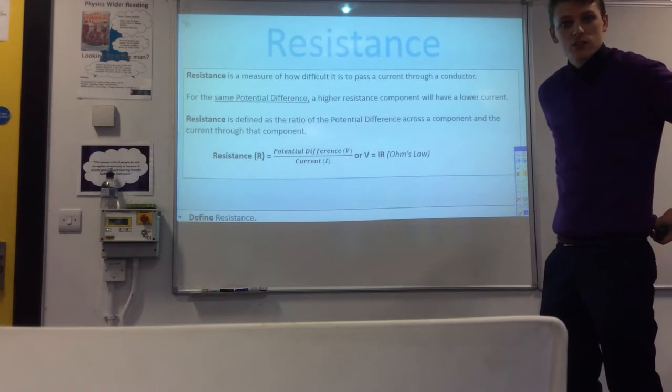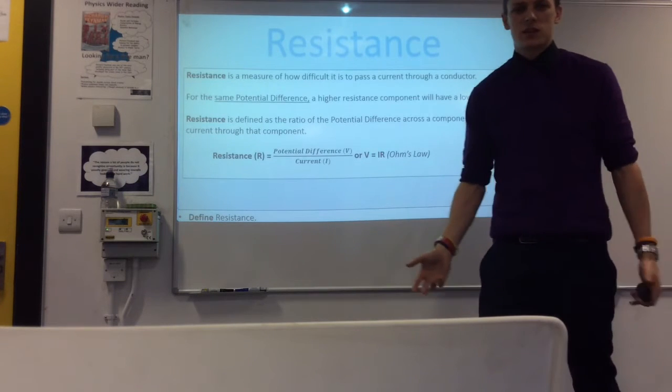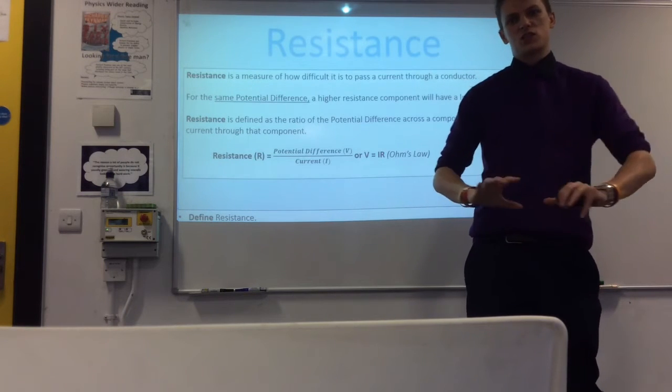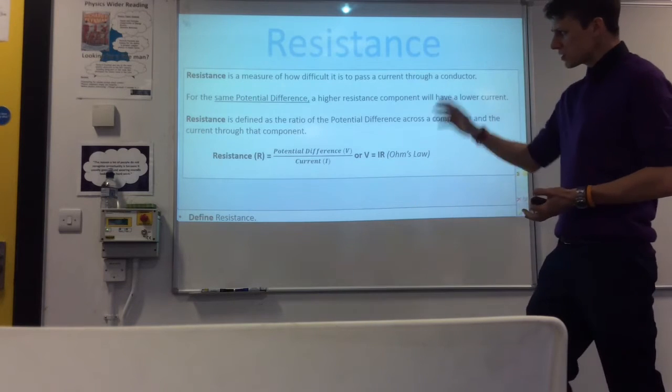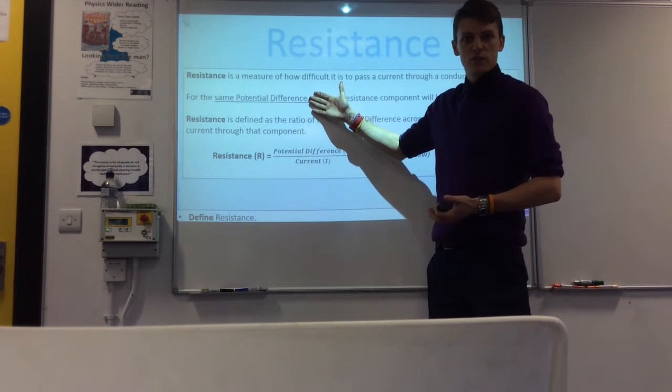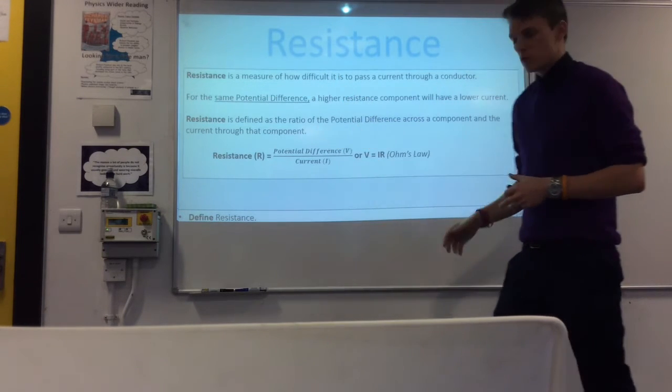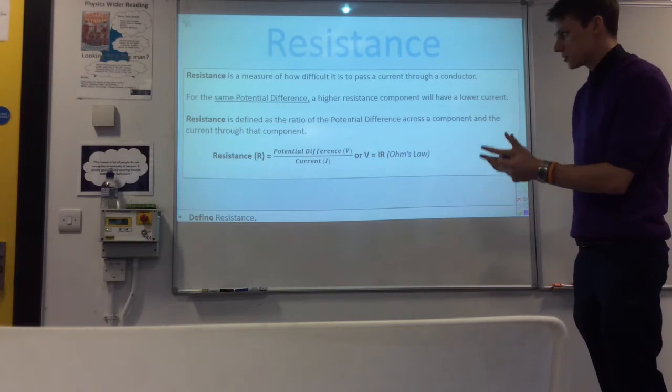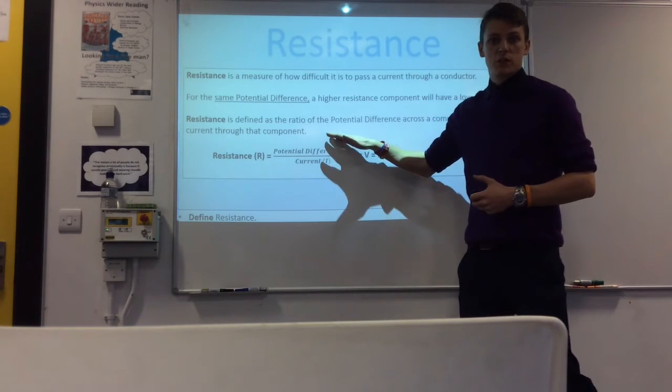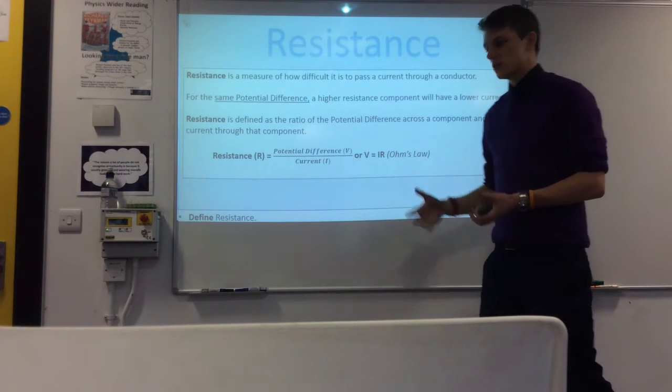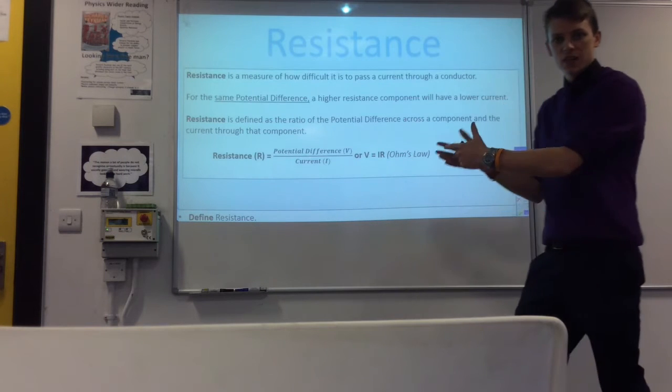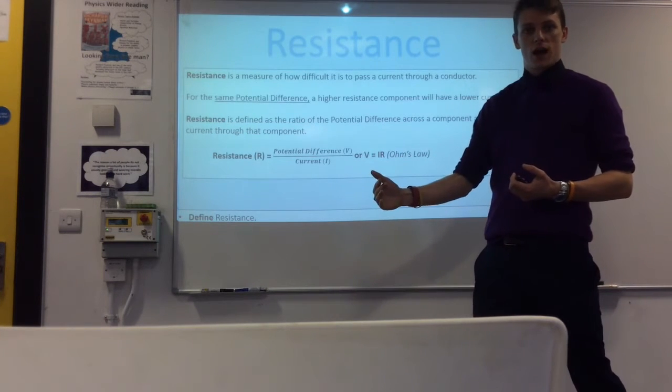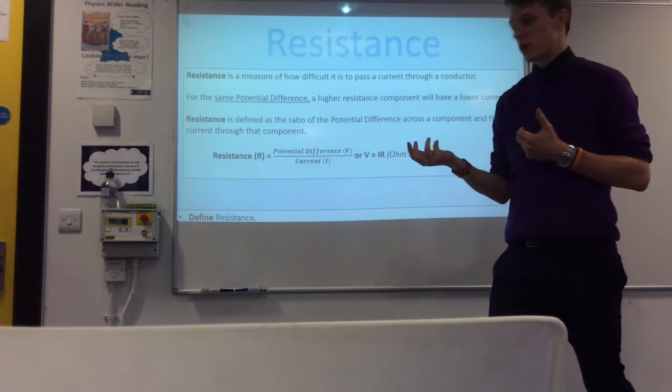Let's have a look at resistance. So resistance generally speaking is how hard it is for a current to pass through a component. That's generally the idea behind it. So if you apply the same potential difference across two components the one with a higher resistance would have a lower current. Essentially that's how it works. Now to be more specific about it which you need to be with your definitions, resistance is defined as the ratio of the potential difference across a component and the current going through that component. That's the precise definition that you'd need to know.